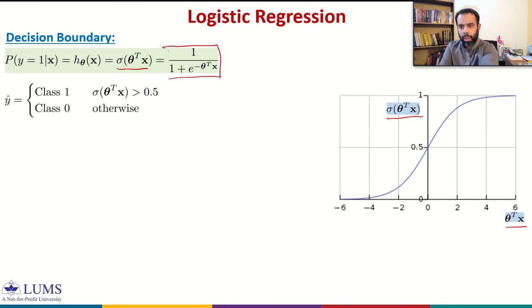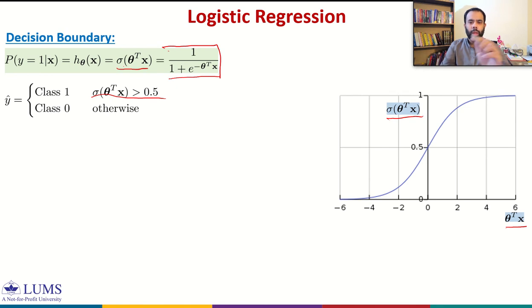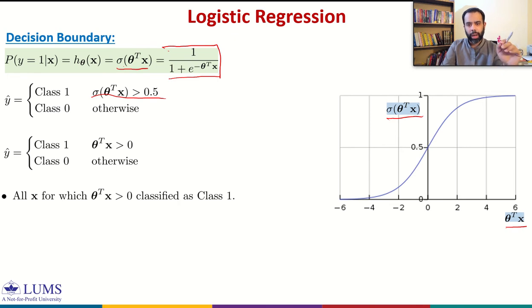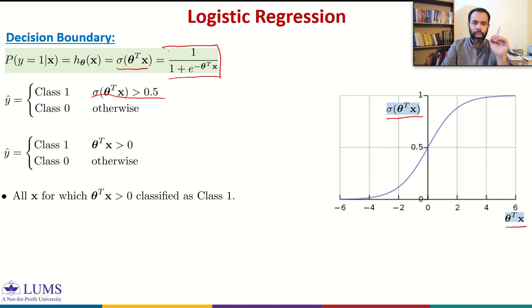How do we translate the condition sigmoid of theta transpose X greater than 0.5 in terms of theta transpose X? When this value is greater than 0.5, theta transpose X is greater than 0. So we assign class 1 when theta transpose X is greater than 0, and class 0 when theta transpose X is less than 0.